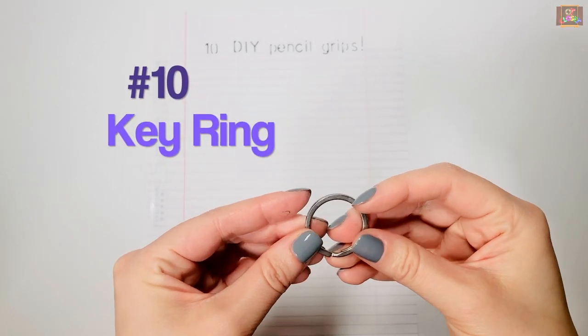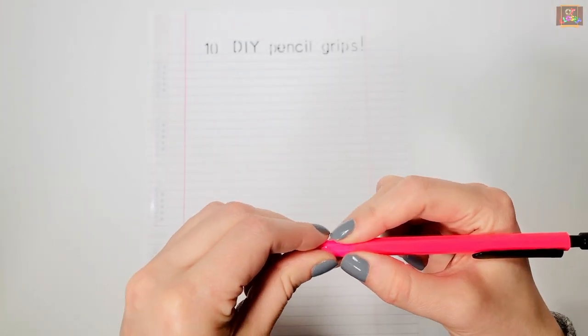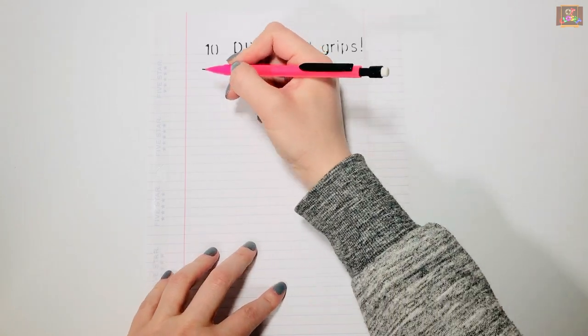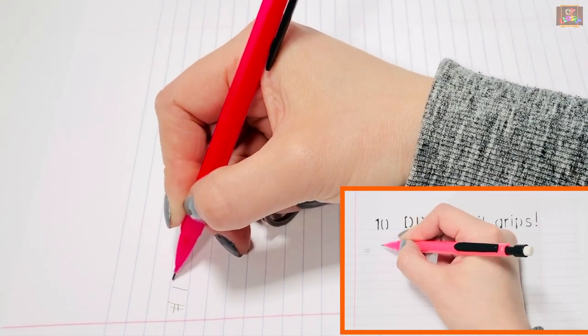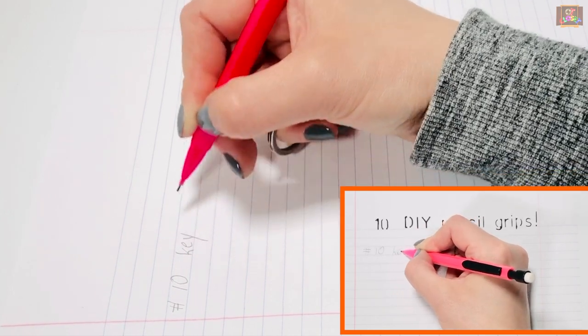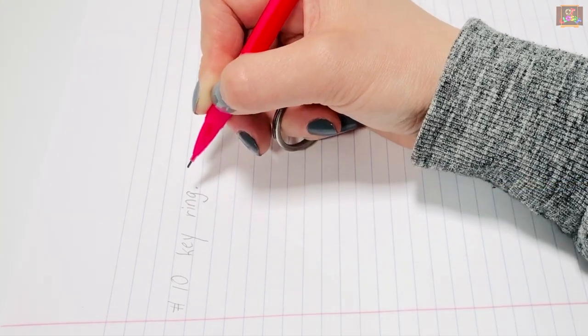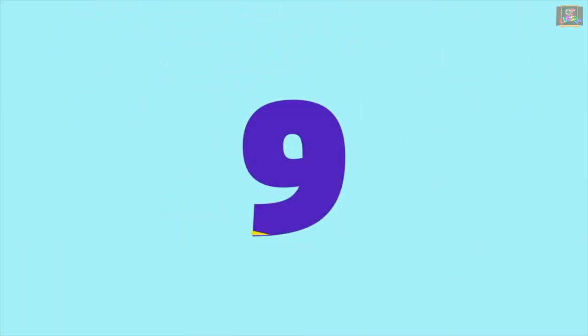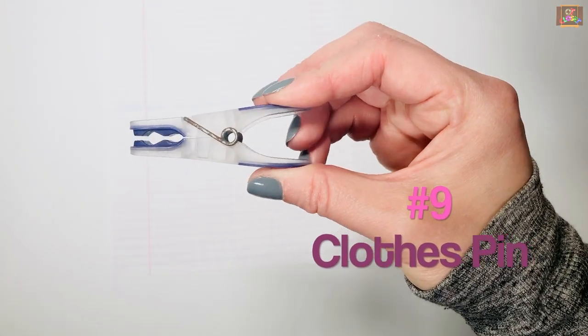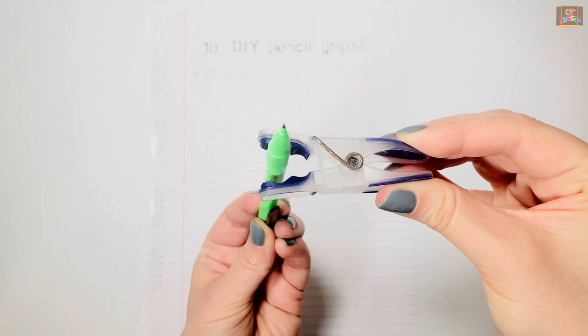Number 10: Keyring. Place your pinky and ring finger inside the keyring and flex it against the palm. The keyring reminds the child to keep the ring and pinky fingers closed against the palm.